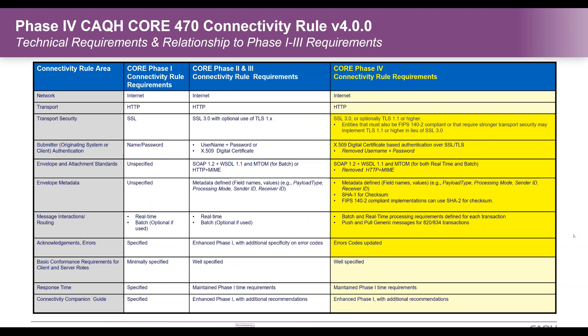The Phase 4 changes, highlighted in the table, require support of SSL 3.0, digital certificates, SOAP and WSDL with MTOM. The metadata is defined with SHA-1 for checksum, and FIPS 142 compliant implementations can also be used. Batch and real-time processing modes are defined for each of the transactions — not just one or the other. We also allow for push and pull of generic messages for the 820 and 834 transactions, and we've expanded and updated the error codes as well.